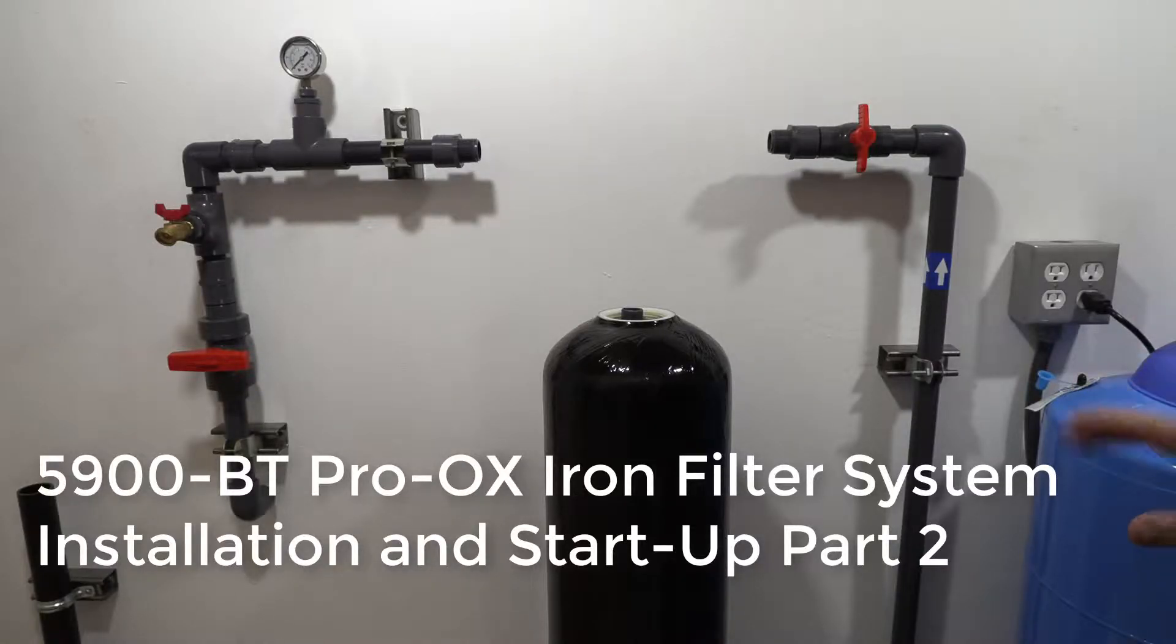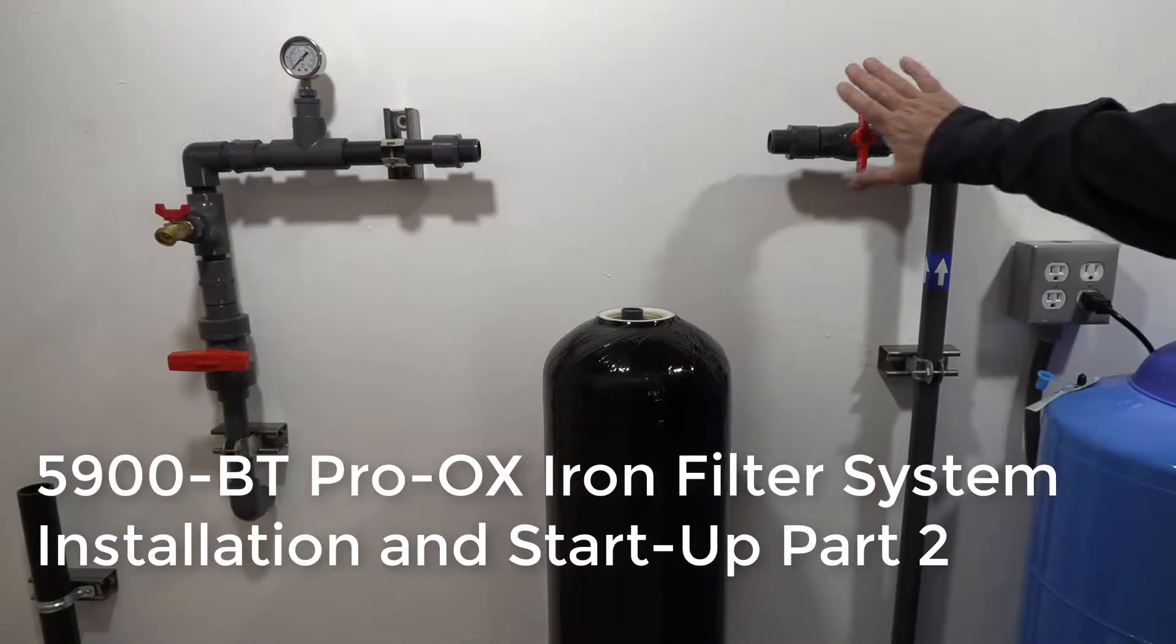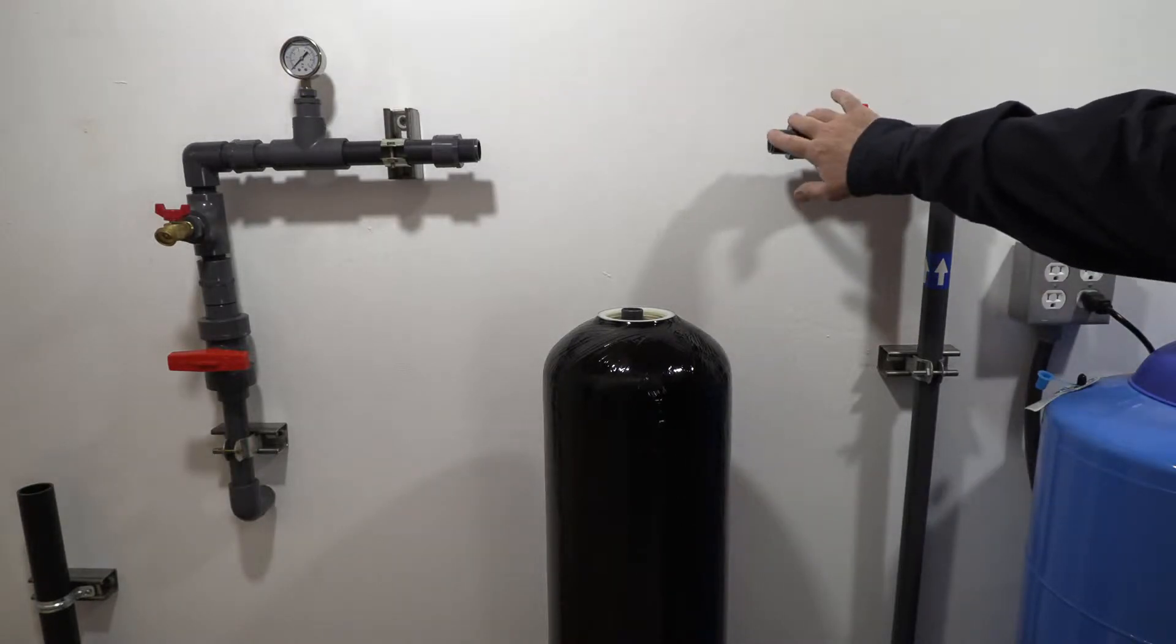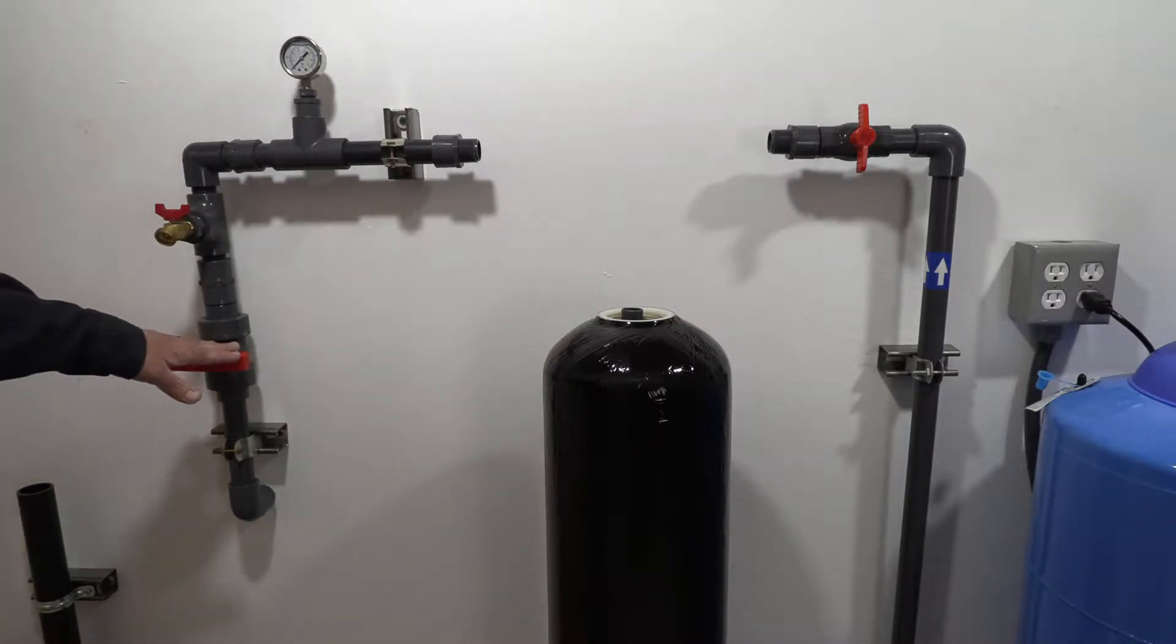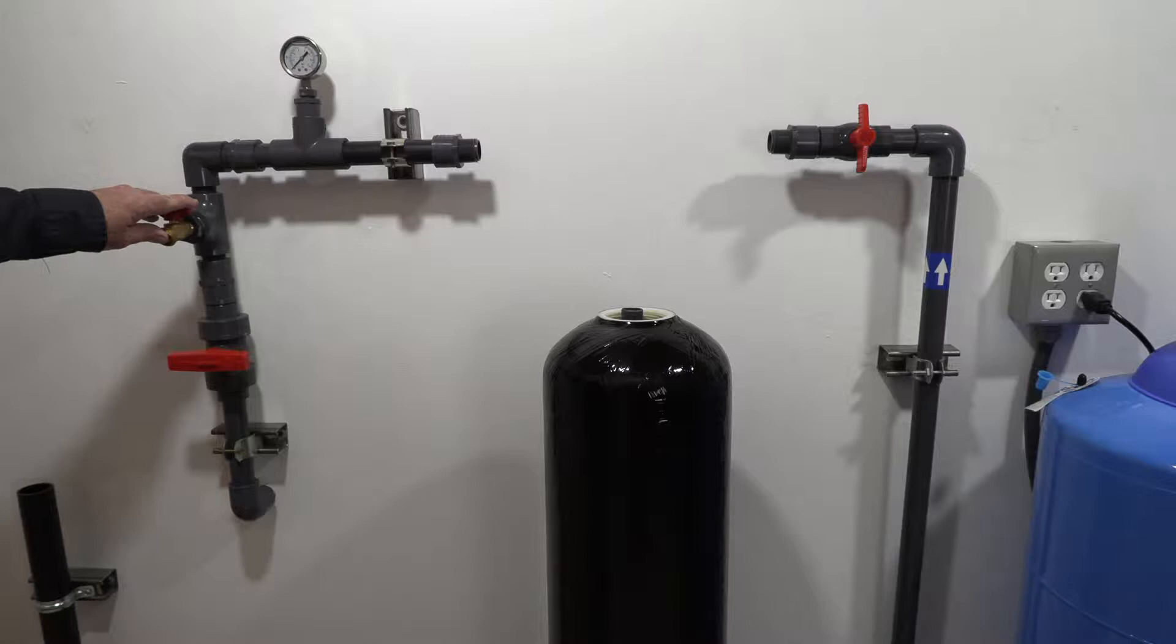For this particular system we're plumbing it in with Schedule 80 PVC. We installed an isolation valve with a 1 inch MPT fitting here and we have a shutoff to the house and a hose bib here.